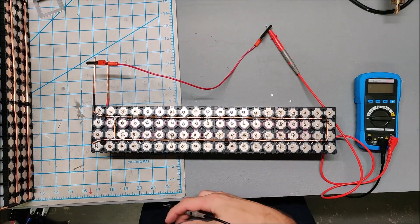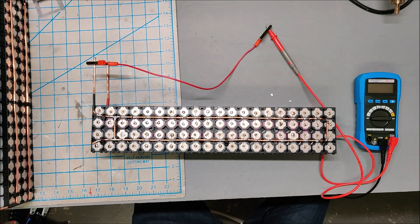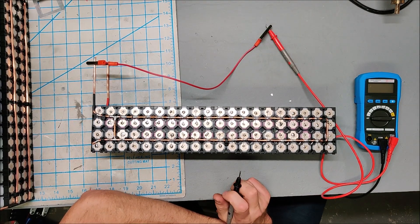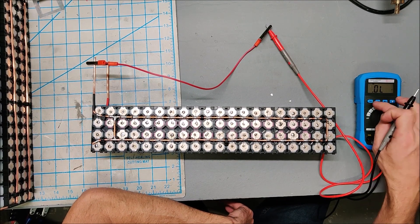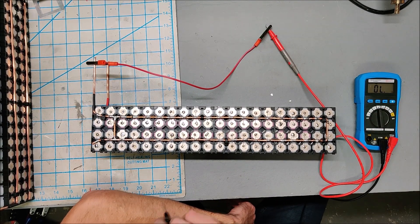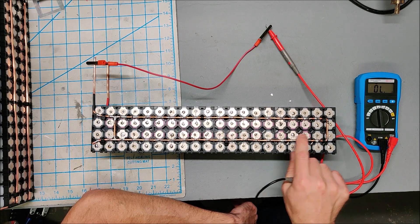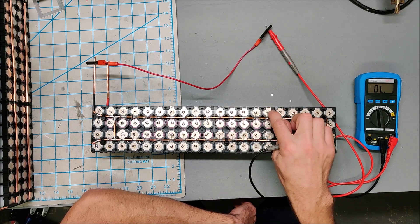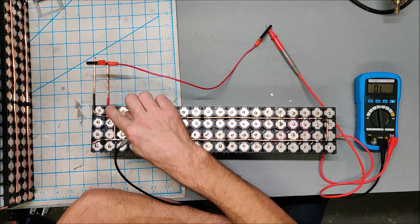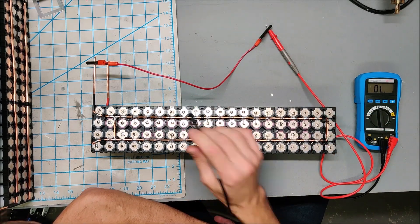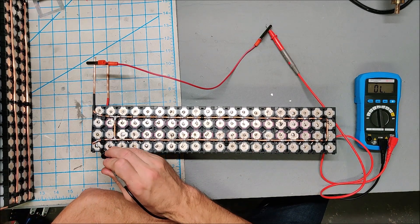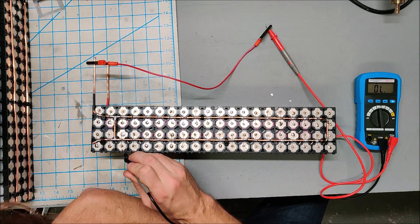One last thing: once the pack is built and soldered, make sure you go through and beep out the pack. The reason is you can get cold joints that you don't realize. Sometimes the solder looks like it flowed but it's just sort of sitting on top of the battery and hasn't actually made an electrical connection with the battery. So once the pack is soldered, go through and beep out every single cell.